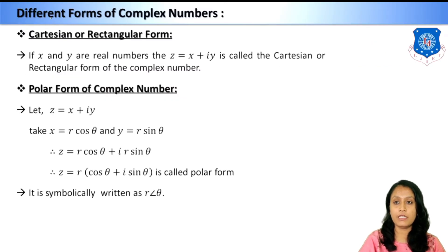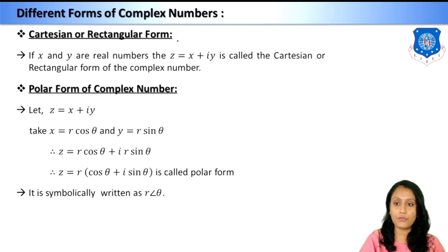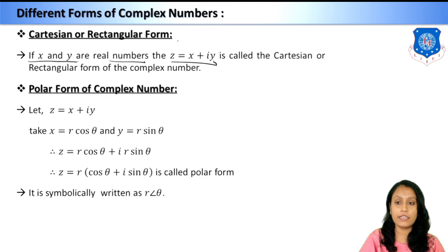The first topic we are going to study is different forms of complex numbers. The first one is the Cartesian or rectangular form. If x and y are real numbers, then z = x + iy is called the Cartesian or rectangular form of a complex number. This we have already studied.